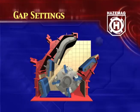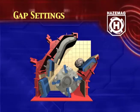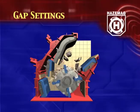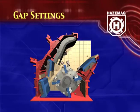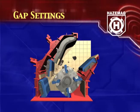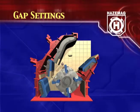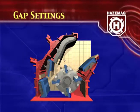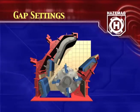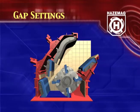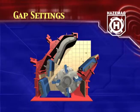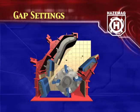Following the path of a rock from its entry into the impactor, past the rotor and impact aprons through to the outlet, it becomes clear that different gap settings will produce different product size results.